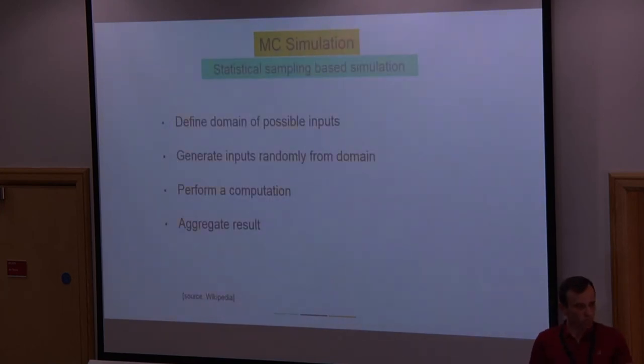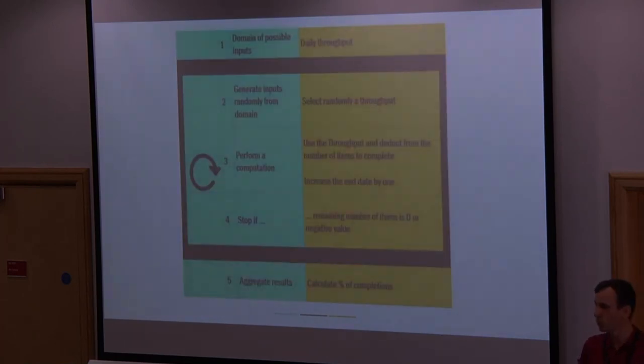Okay, so Monte Carlo simulation is extremely simple, hard to explain, extremely simple, has only four steps. You define the domain of possible inputs. Then you pick randomly a value from domain of possible inputs, perform a computation, aggregate results. In a software world, the domain of possible inputs, in our case, was a daily throughput, how many items have been done. Then we've done a number of thousands of simulations. Each simulation was taking a number from the past, done a computation and aggregate the results and produced a histogram.